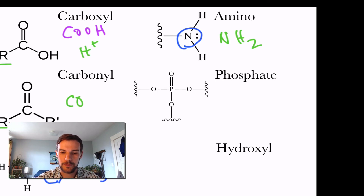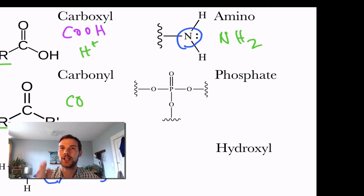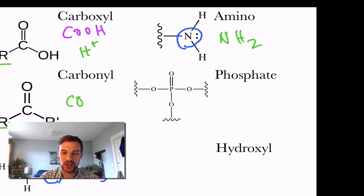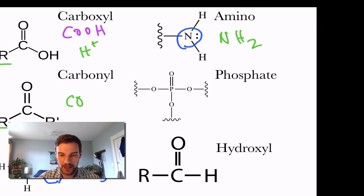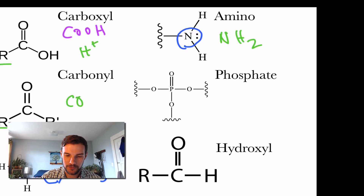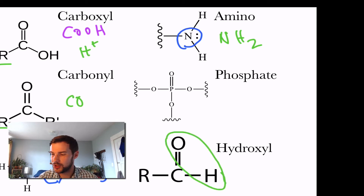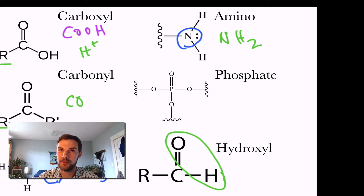Phosphate groups have a phosphate in the middle. Used in DNA and in ATP, the bonding energy from a phosphate group is really important for energy conversion in our bodies. The hydroxyl group is written as OH, and it makes molecules polar, which allows them to readily dissolve in certain solutions.